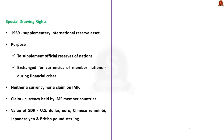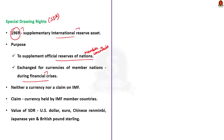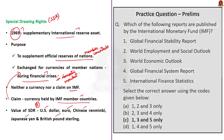Now we will see about the Special Drawing Rights (SDR) of the IMF. The SDR is a supplementary international reserve asset created by the IMF in 1969. The main motive for its creation is to supplement the official reserves of member countries — SDRs can be exchanged for the currencies of member nations in case of financial crisis. Note that the SDR is neither a currency nor a claim on the IMF; it only represents a claim to currency held by IMF member countries. The value of the SDR is based on a basket of five currencies: the US dollar, the euro, the Chinese renminbi, the Japanese yen, and the British pound sterling.